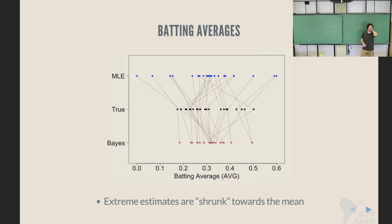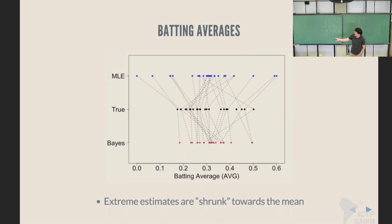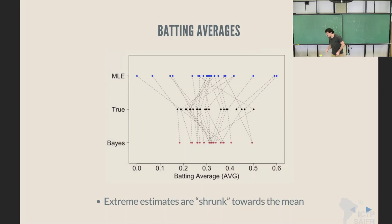A lot of what we're doing today is variations on this — putting distributions on parameters and getting estimates that inform each other. Why did this guy change so much? Because given the distribution of the rest of the players and the beta distribution estimated for the distribution of batting averages for all players, this estimate was too far away — too absurd. So it got pulled back to be along with the pack. This can improve estimates massively. In this example, how can you determine the true estimate? This is a simulation, but there are other examples where people use the first month of the season and compare it to the rest — baseball players play about 200 games a year, so at the end you have a very good estimate.